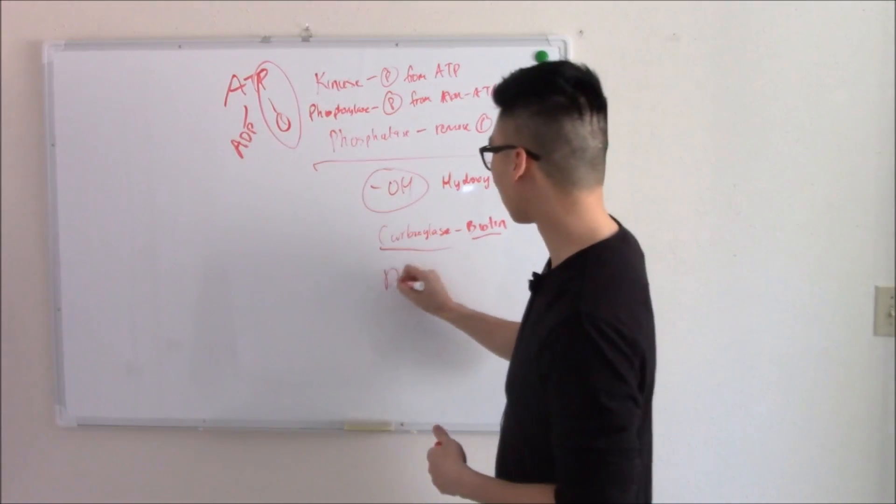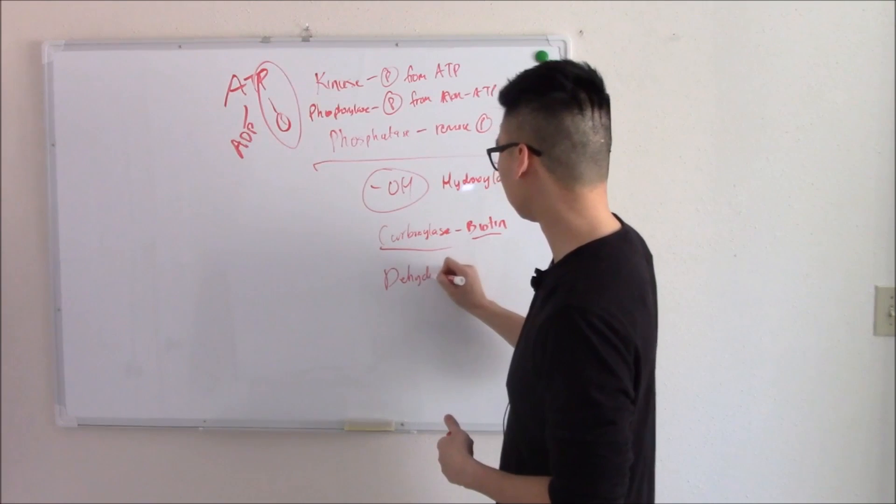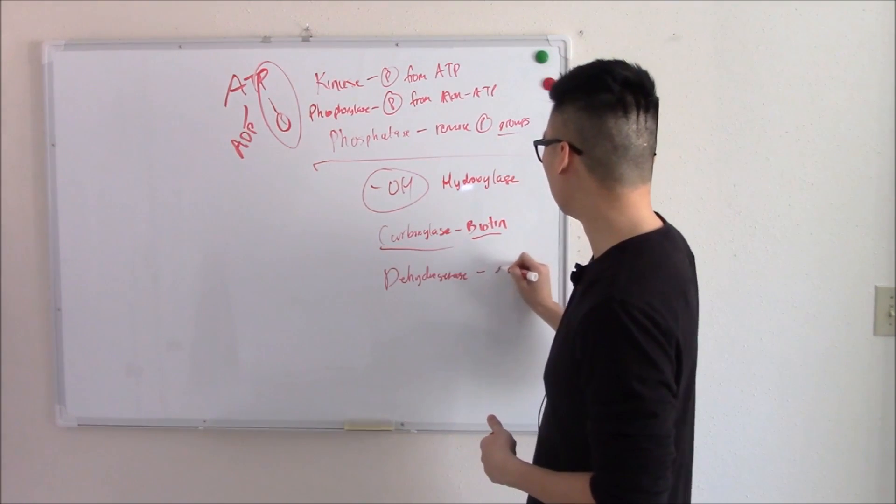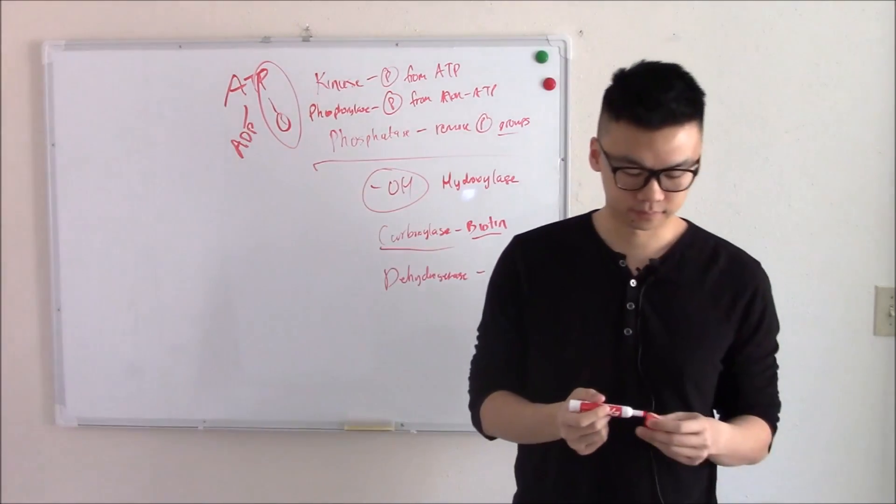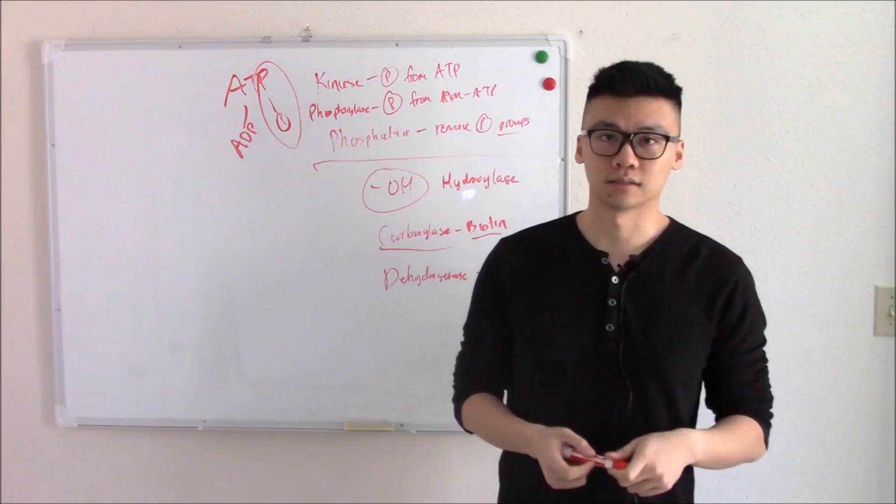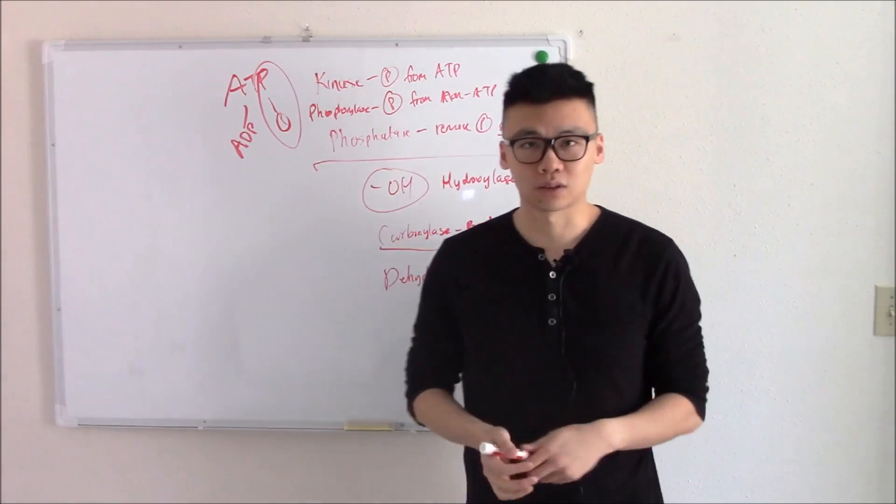One other thing, dehydrogenases help move electrons around in reactions we call oxidation reduction reactions. So that just goes over some background terminology.